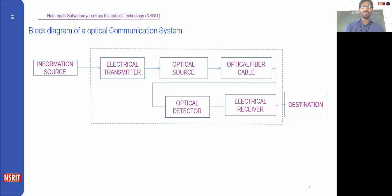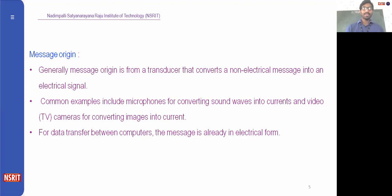From the optical source, the optical signal is coupled with the optical fiber cable — that means we are inserting the emitted signals into the optical fiber cable. This cable transmits the optical signal towards the detector. So the transmission medium in this case is the optical fiber cable. The optical detector detects the electrical information signal present in optical form, and then the electrical signal is transmitted to the electrical receiver, which separates the information signal and provides it to the destination.